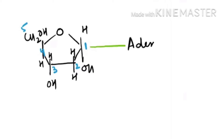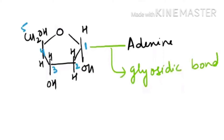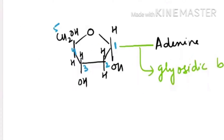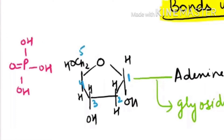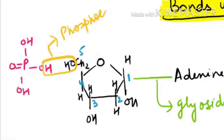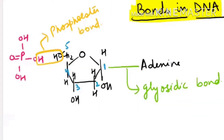This glycosidic bond is at the first position. At the fifth end, phosphoric acid is attached. The phosphoric acid is attached through an ester bond, so this bond is known as the phosphoester bond. This completes your one nucleotide.